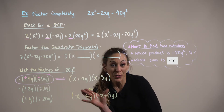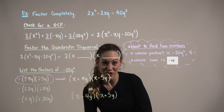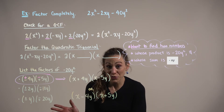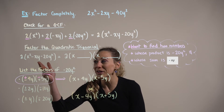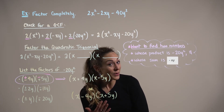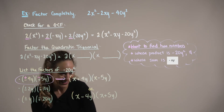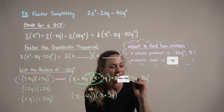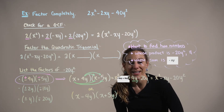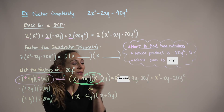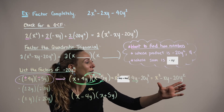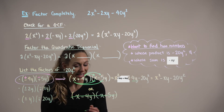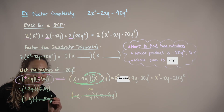We've listed the two binomial products for this combination of factors. To determine which one is going to produce the quadratic trinomial we're looking for, we simply multiply these out. And lucky us, we found the correct combination on our first attempt, so we can cross out this second case and our other factors.